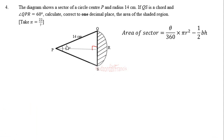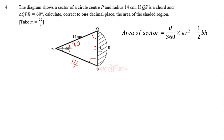This line divides the triangle into two congruent shapes, so each half is 30 degrees. Because the central angle is 60 degrees and the base angles must be equal, each base angle is also 60 degrees. Since all angles are 60-60-60, all sides of the triangle are 14 centimeters each, making it equilateral. So half the base is 7 centimeters.